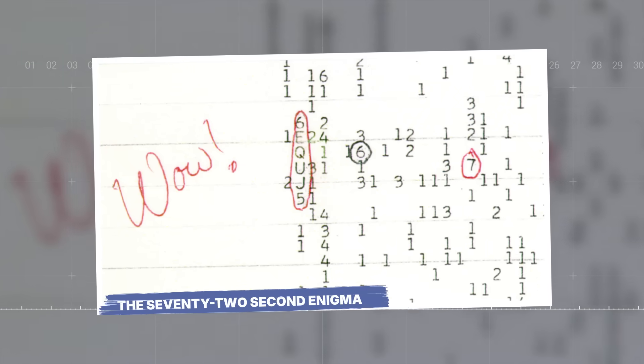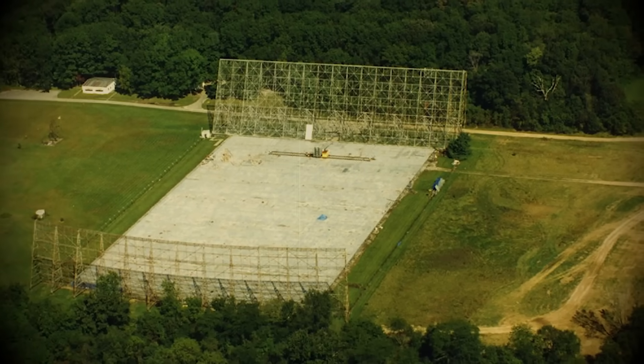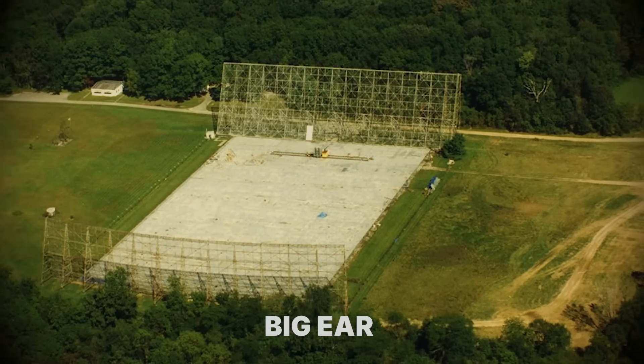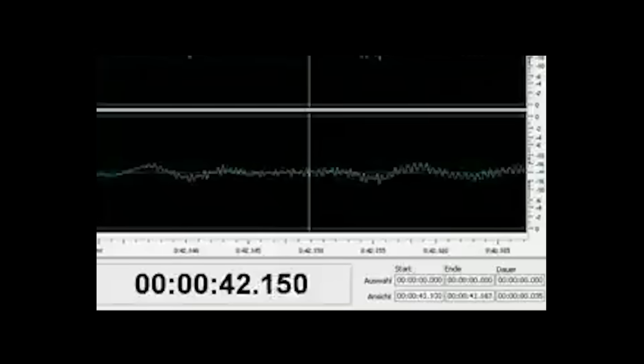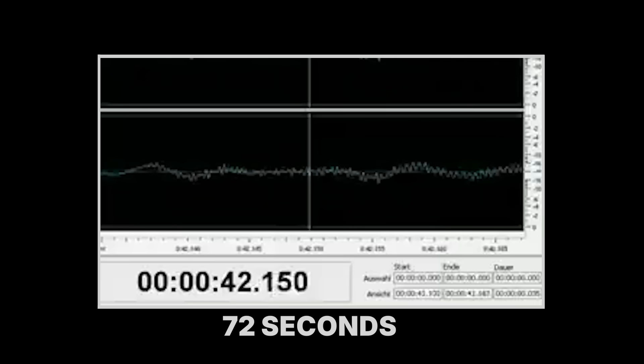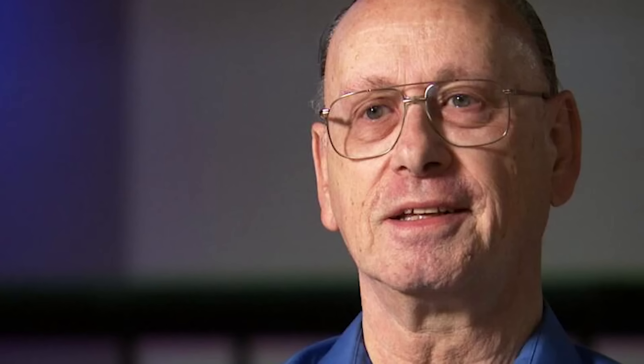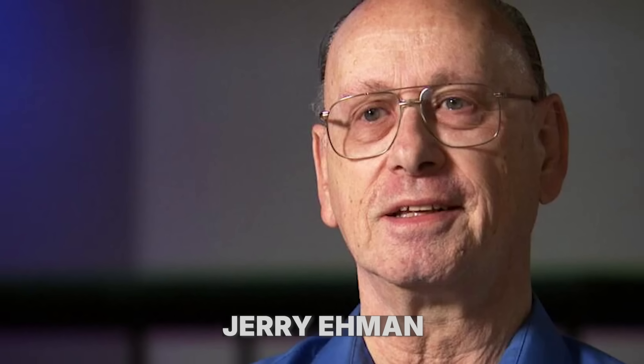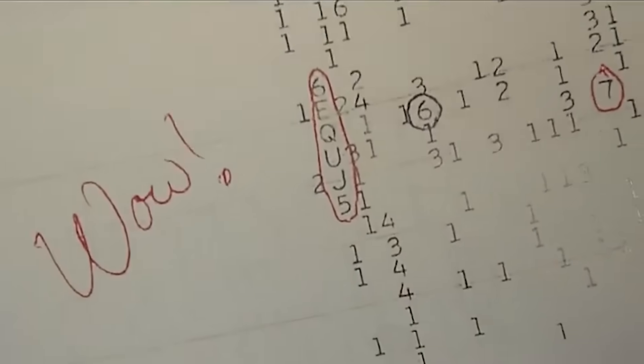The 72-second enigma. For nearly half a century, the WOW signal has been the holy grail for those searching for life beyond Earth. On a summer night in 1977, a radio telescope in Ohio nicknamed the Big Ear picked up a powerful narrowband radio signal. It lasted for a mere 72 seconds, but its intensity was off the charts, 30 times stronger than the background noise of space. An astronomer named Jerry Amen, reviewing the data printouts a few days later, was so stunned he circled the signal and wrote WOW in the margin. And the name stuck.